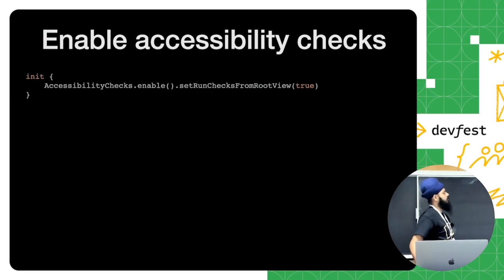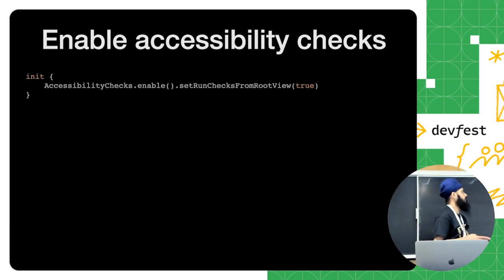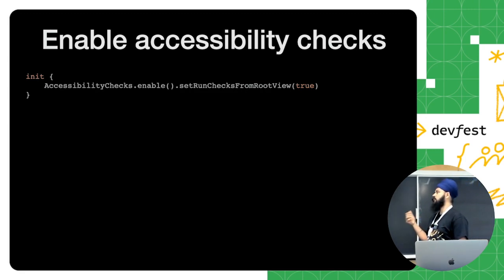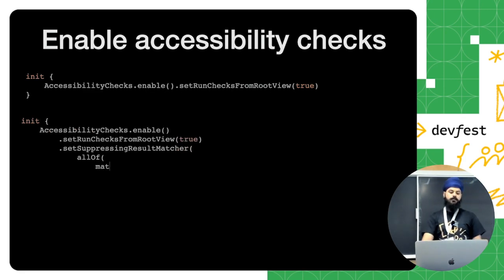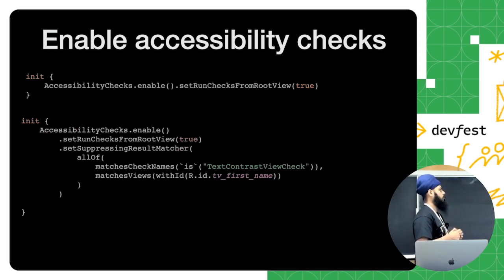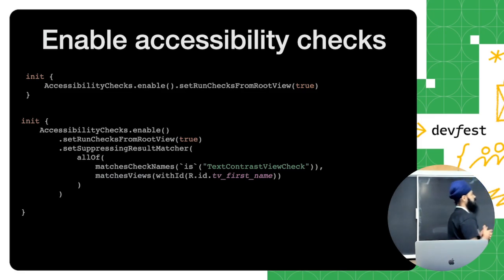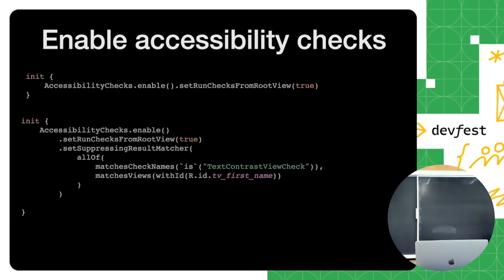For automated tests in your application, you just need to set `accessibilityChecksEnable` and the second option `setRunCheckFromRootView`. What it does is process the full layout — if there are any issues like missing touch target size, color contrast issues, or missing content description, it will fail your test and provide all the information in the logs. If you want to ignore certain results, use `setSuppressingResultMatcher` and provide the matchers. For example, you can specify that for a text contrast view check on a particular view like `textViewFirstName`, just skip it and don't fail the test.